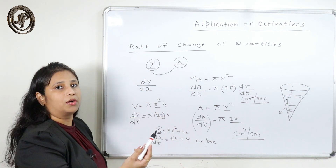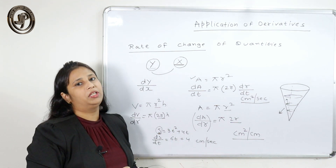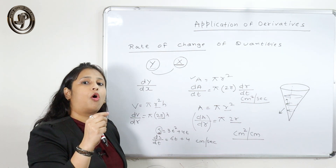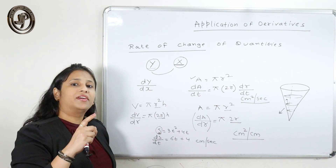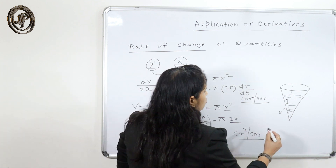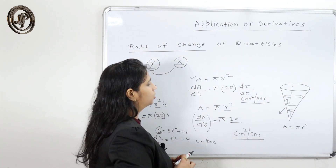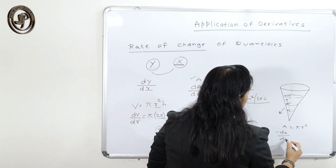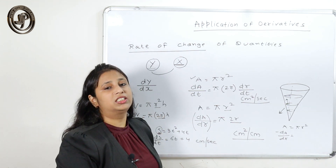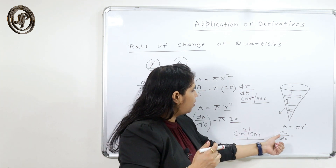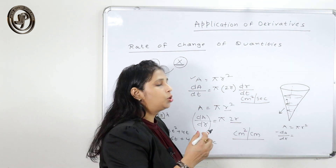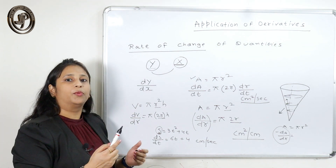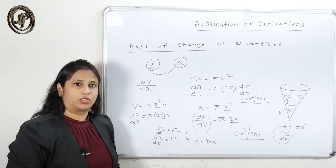If something is decreasing — like volume decreasing with respect to radius, or area decreasing with respect to radius — we put a minus sign. If the rate of one quantity is increasing with respect to another, we show it with a positive sign; otherwise, we show it with a negative sign. So now we are going to start with some questions related to rate of change.